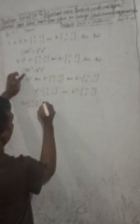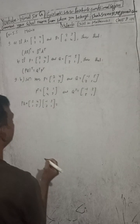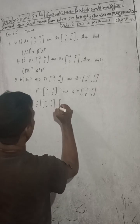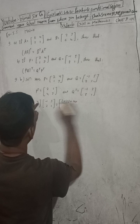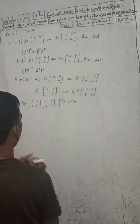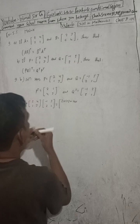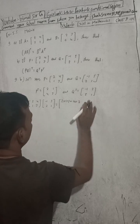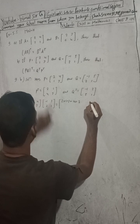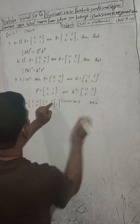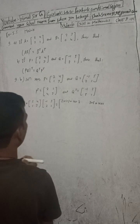Now find PQ. P is [2,4; 1,3] multiplied by Q [-1,5; 2,1]. First row with first column: 2×(-1) + 4×2. First row with second column: 2×5 + 4×1. Second row with first column: 1×(-1) + 3×2. Second row with second column: 1×5 + 3×1.